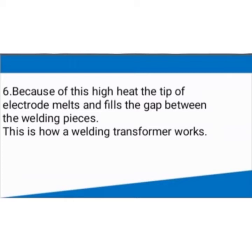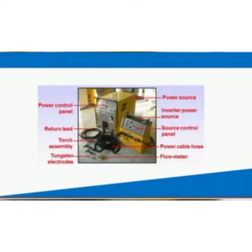This is how a welding transformer works. Now, see the diagram: power control panel, return lid, torch assembly, tungsten electrodes, power source, inverter power source, source control panel, power cable house, flow meter.